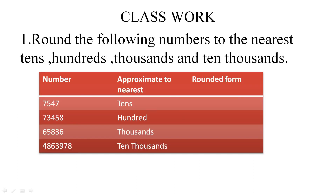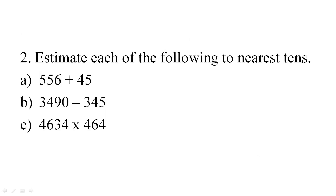I have given some questions for class work. You can do these yourself. Here, if you want to round off to nearest 10s, you will check the place of 1s and you will get 560. When you round off 45, you will get 50. Simply add both of the numbers and you will get the final answer. Similarly, you can do options B and C. Thank you for watching and see you in the next video.